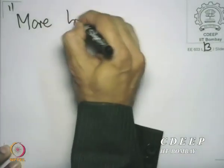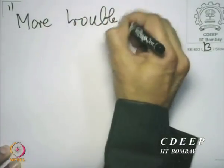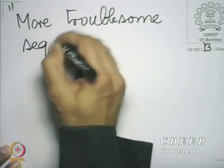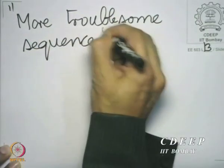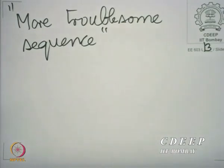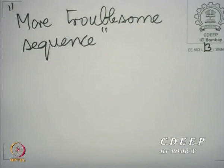Let us take a more troublesome example sequence. I say more troublesome because, as we said, the unit step sequence at least does not produce an unbounded output for all bounded inputs. But the sequence we will soon see, if it becomes the impulse response of an LSI system, it more or less always wishes to produce an unbounded output, except for some very specifically chosen bounded inputs.